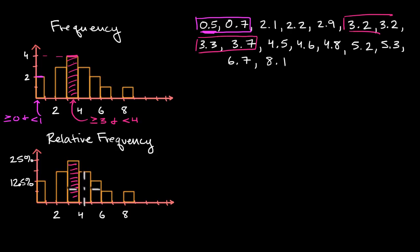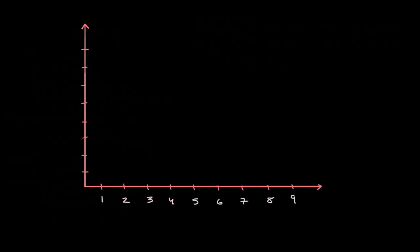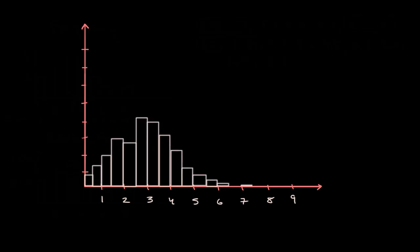But there are also cases where you have many, many more data points, and you want more granular categories. So, what you could do is, well, let's just make our categories a little more granular. For example, instead of them being one glass of water wide, maybe you make them half a glass of water wide. So, this first category could be greater than or equal to zero, and less than zero point five. And that will give you a clearer picture.